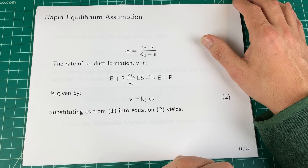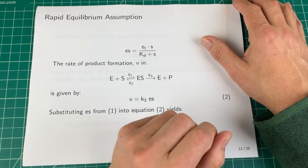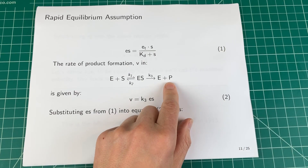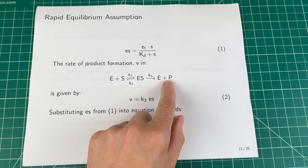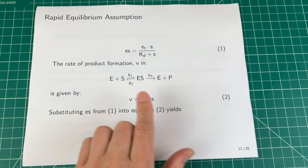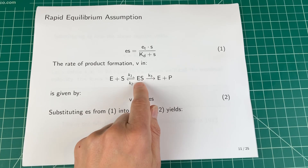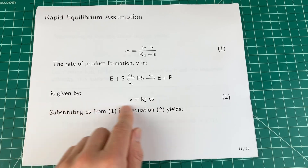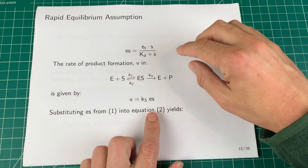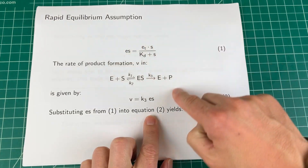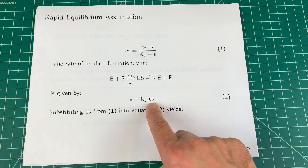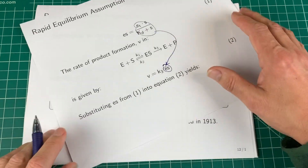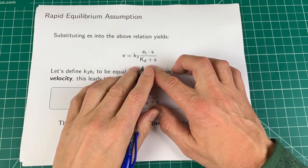The rate of reaction is the rate of product formation. If I measure how the product increases over time, that gives the reaction rate, which equals K3 times the concentration of enzyme-substrate complex: V = K3·ES. I now take the expression for ES and substitute it into this rate equation, ending up with an expression for V in terms of known quantities.